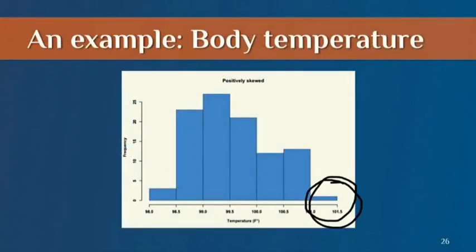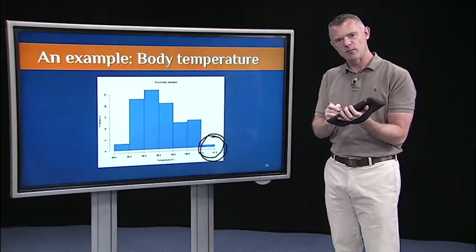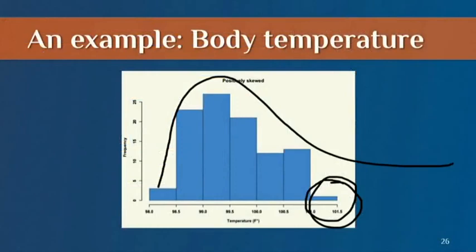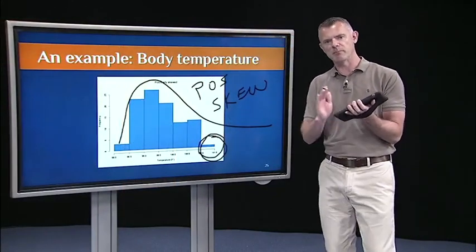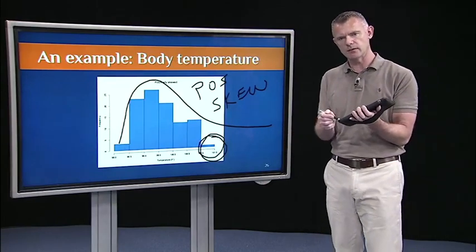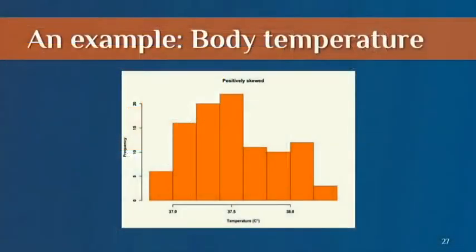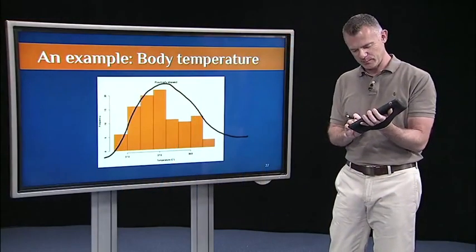So the distribution is not quite normal — it's more like this if I smooth it out. That's what's called a skewed distribution, and this is a positive skew. The way to remember that is: the skew is where there's few. There are fewer scores at the positive or high end of this distribution — that's why it's a positive skew. The same data plotted in Celsius also shows this positively skewed distribution.